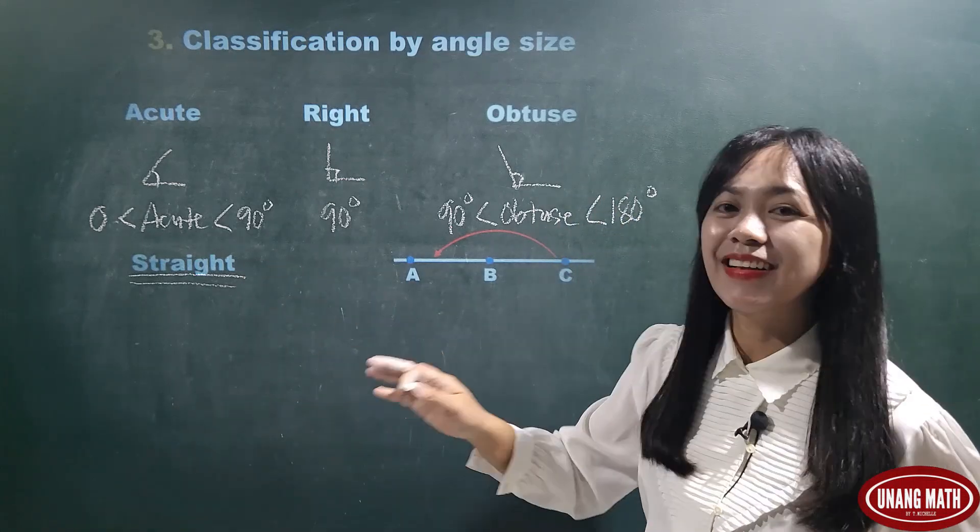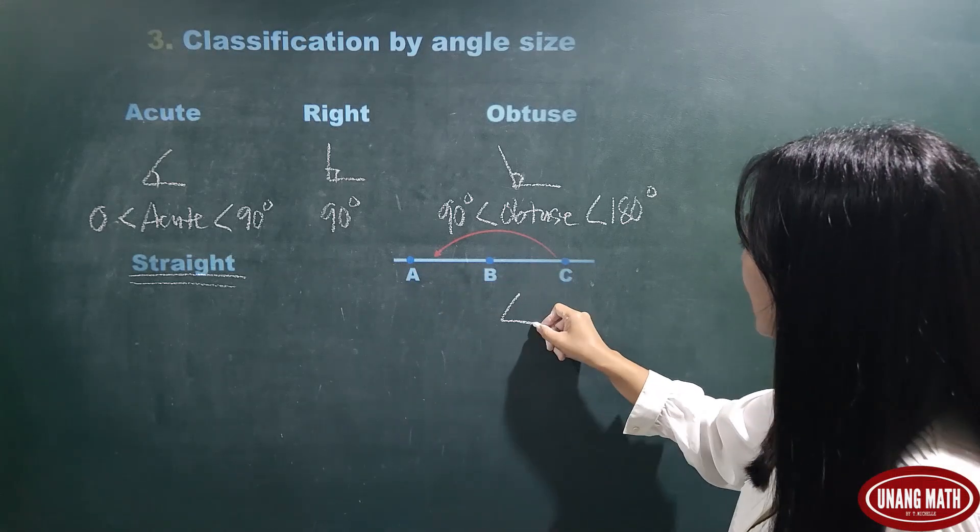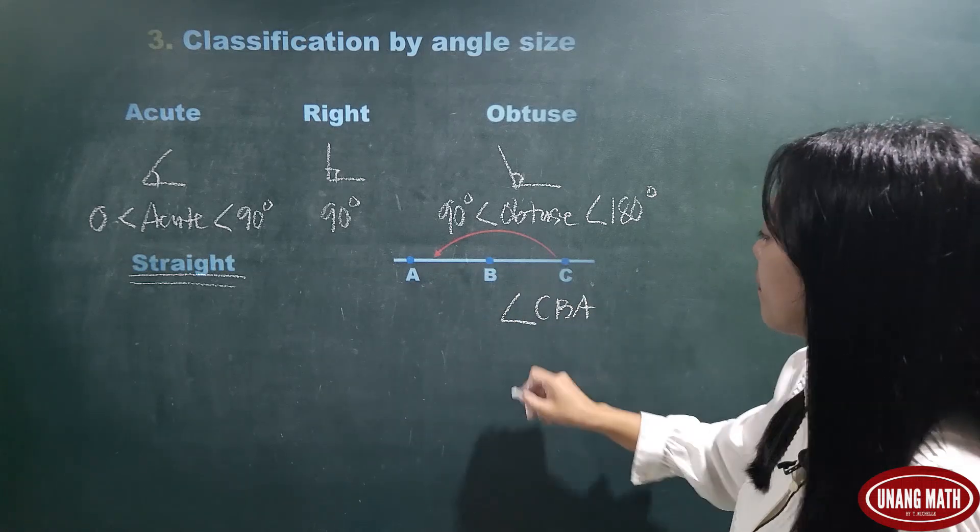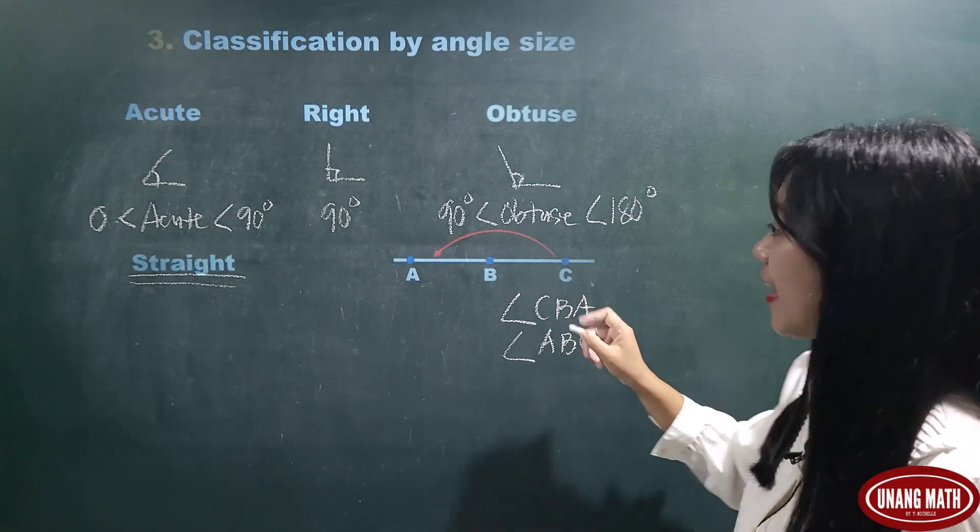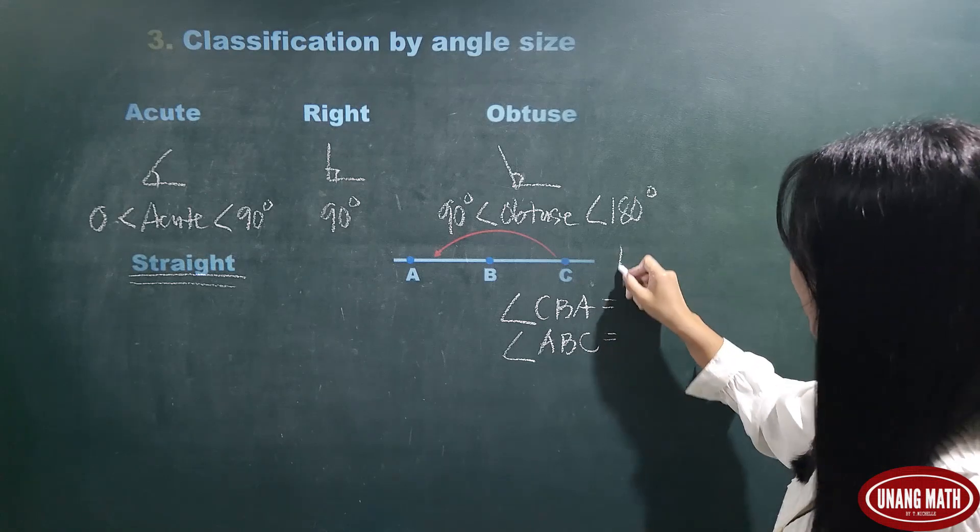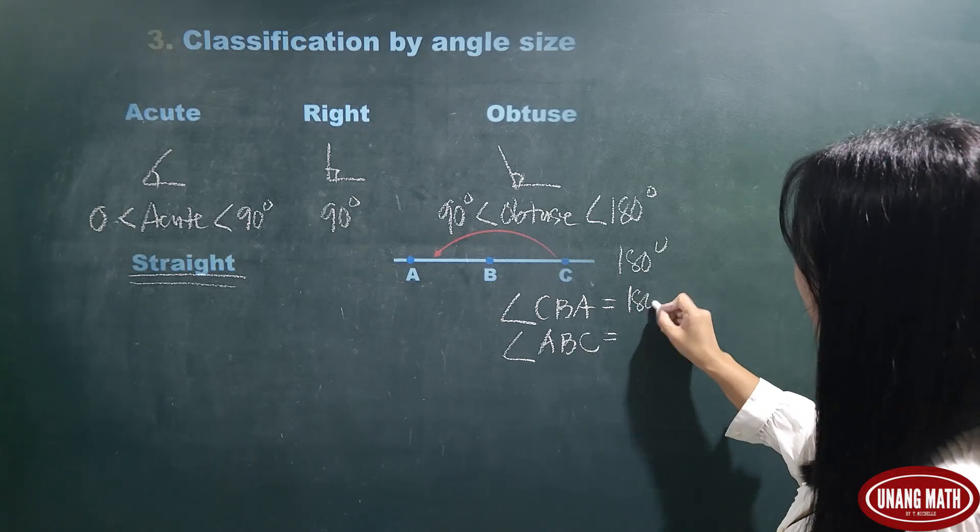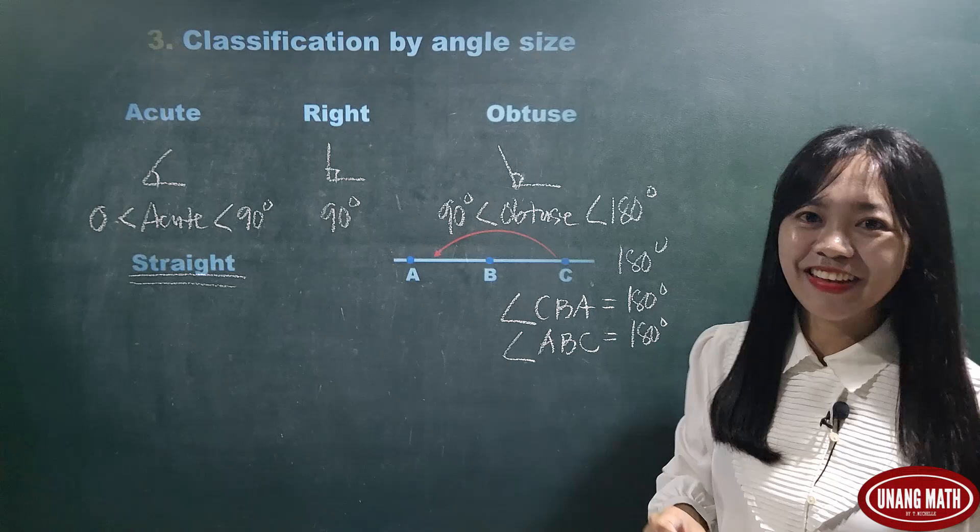Straight angle is a straight line. So, in this figure, angle CBA or angle ABC is a straight angle. And a straight angle measures 180 degrees. So, angle CBA is 180 degrees or angle ABC is 180 degrees.